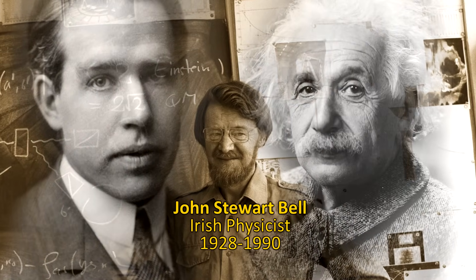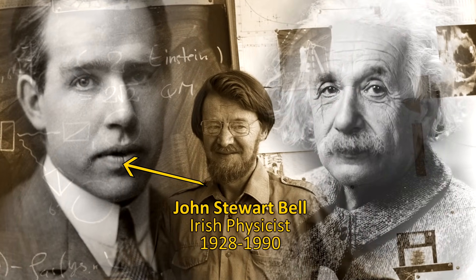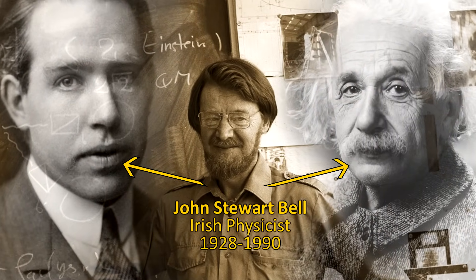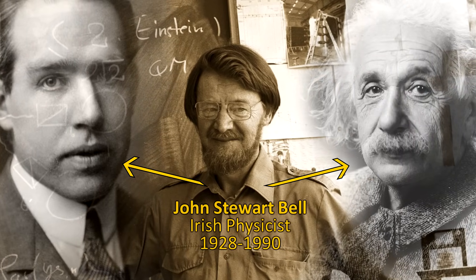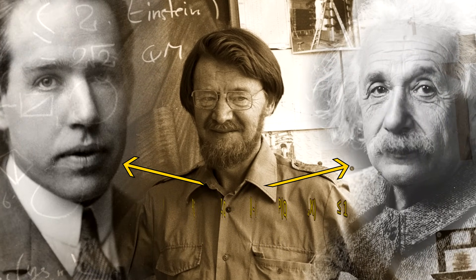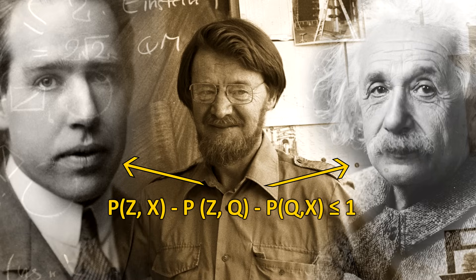Then in 1964, Irish physicist John Bell devised a way to prove whether Einstein's view of a classical deterministic view of reality was correct, and he put this in a simple, elegant equation called the Bell inequality.